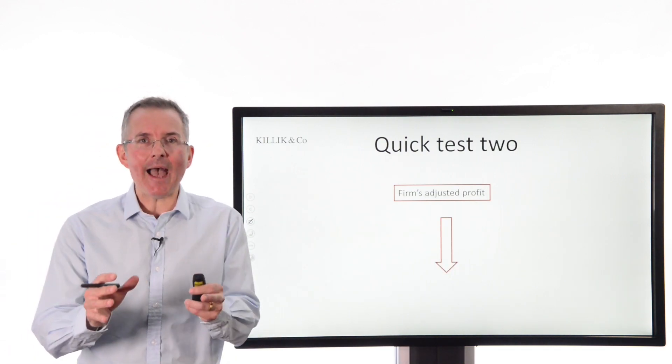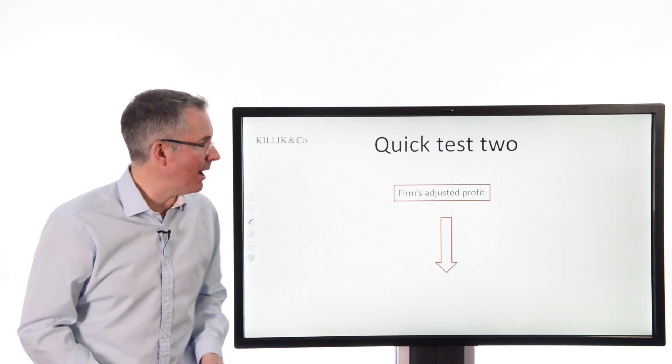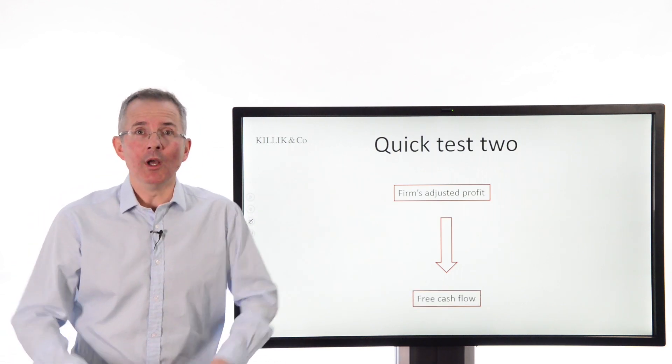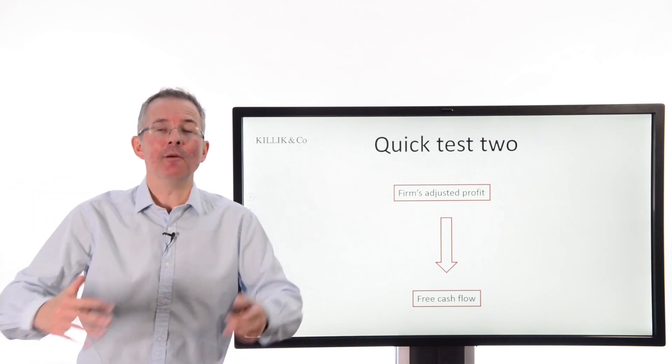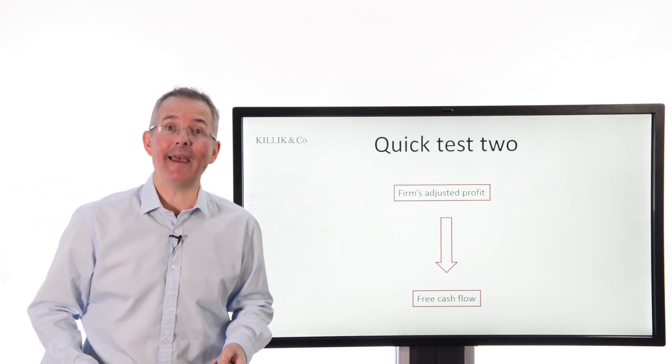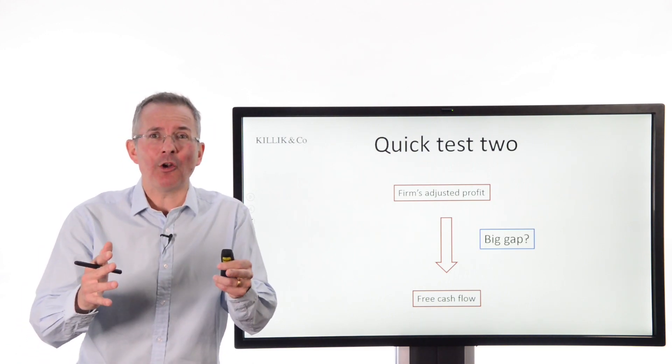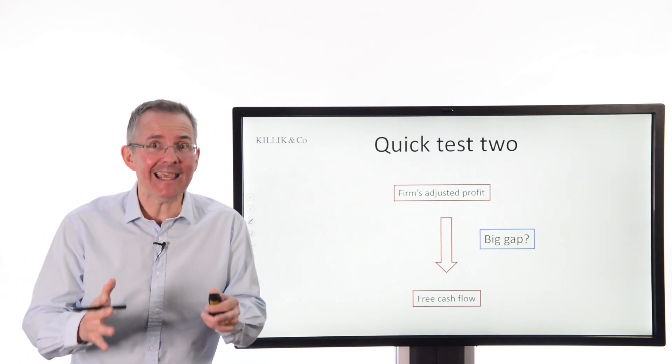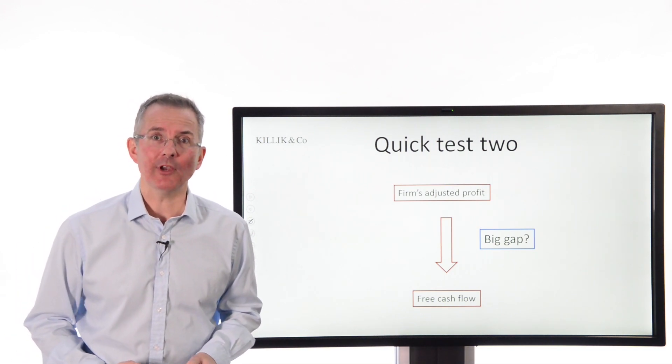Test two, compare the firm's adjusted profit, I've called it, whatever they call it, their favourite number, to free cash flow. That's the operating cash flow they have to report in the cash flow statement, adjusted for the minimum capital expenditure required to maintain the business. Again, a big gap is just going to make you think, well hang on a minute, can I trust the profit number? Is it being backed by underlying cash generation from the same management team?